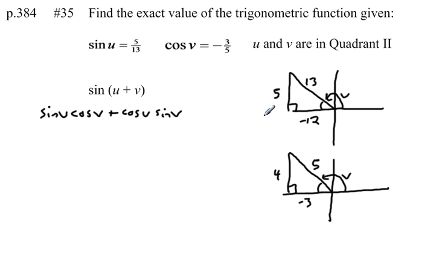So each of these values we can get by looking at these two triangles. For example, when I'm looking for the sine of u, I'm going to look at triangle u up here. And I know from SOHCAHTOA, sine is opposite over hypotenuse. So the sine of u equals 5 thirteenths times.